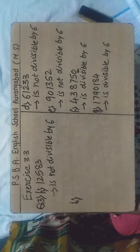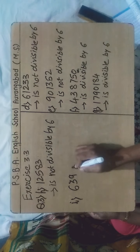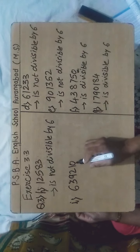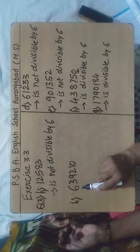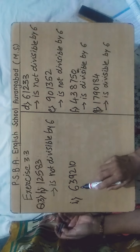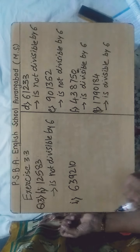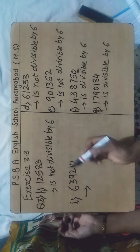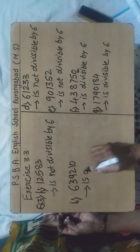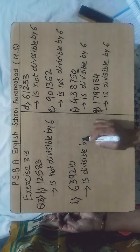Sub-question I: the number given to us is 6,39,210. It is having 0 at its ones place, so it is divisible by 2. The sum of digits: 6+3+9+2+1+0 = 21, which is divisible by 3. Therefore the above number is divisible by 6.